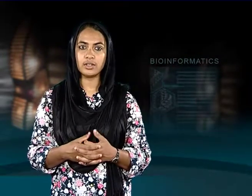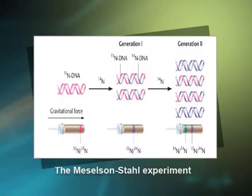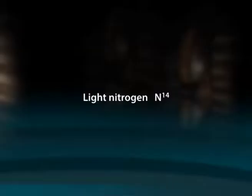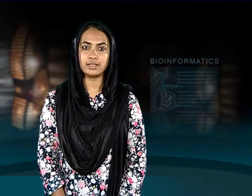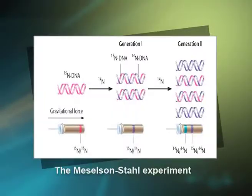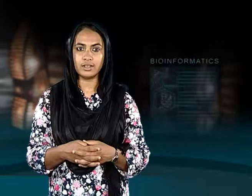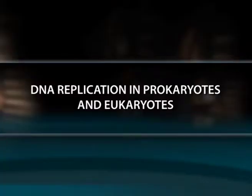E. coli cells were grown for many generations in a medium containing only heavy nitrogen N¹⁵ so that all the nitrogen in their DNA was N¹⁵, giving a single band shown in pink after cesium chloride density gradient centrifugation. When cells were transferred to a medium containing only light nitrogen N¹⁴, DNA isolated after one generation showed an intermediate band in purple. Continuation for a second generation yielded two hybrid DNAs and two light DNAs shown in red, confirming semi-conservative replication.